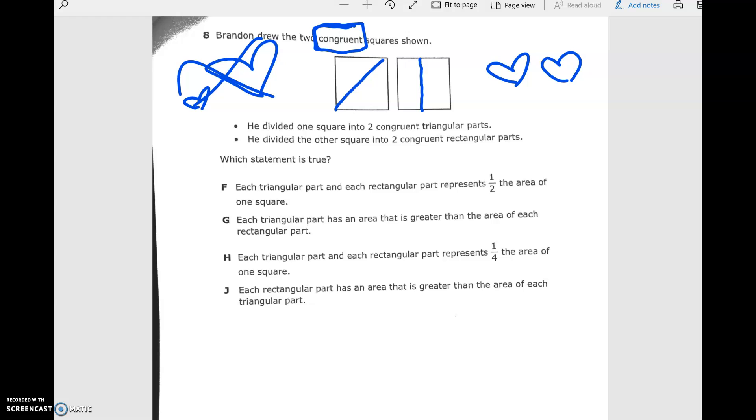So, he divided the other square into two congruent rectangular parts. I'm going to go up and down. You could have gone horizontally too. Which statement is true? Each triangular part and each rectangular part represents one half of the area of one square. Well, look, guys. As long as they're equal pieces, this is one half and this is one half. And this is one half and this is one half. So, I like that answer.